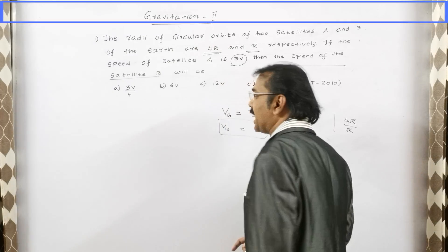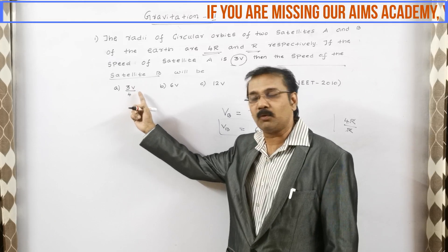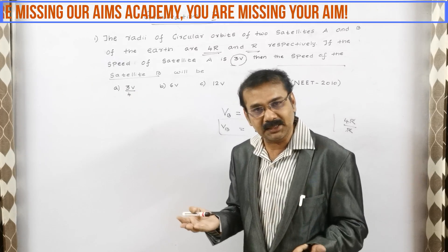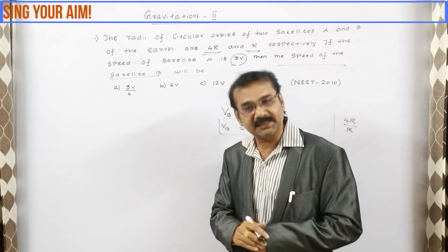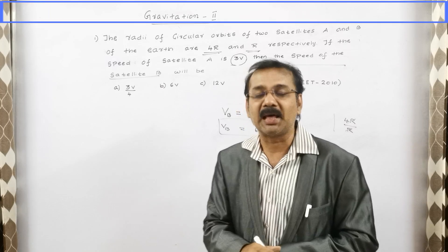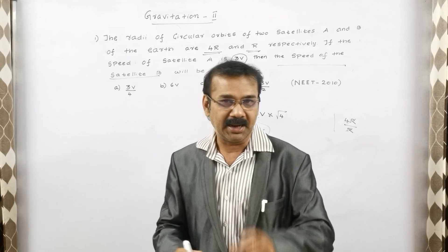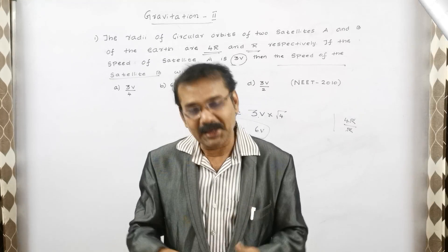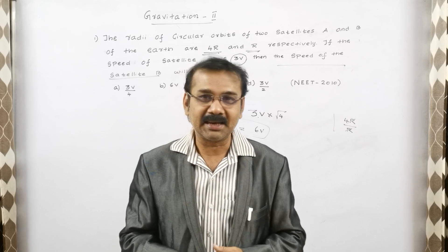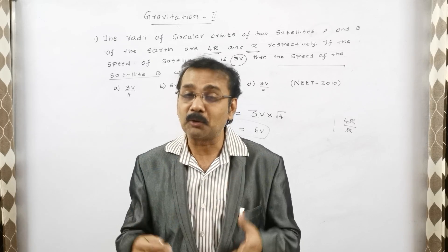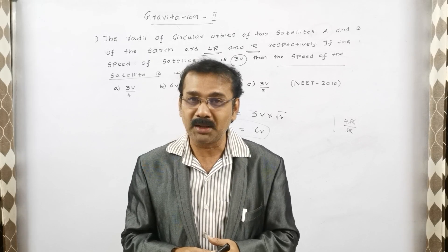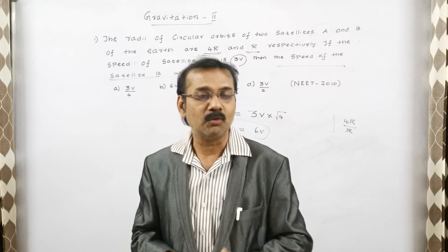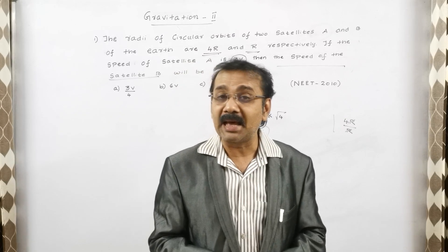Now let us check the options — option A is 3p/4, but we got 6v immediately. The answer lies in option B as 6v. So the answer is option B, which is 6p.